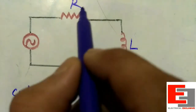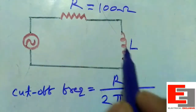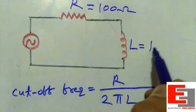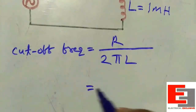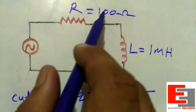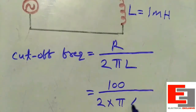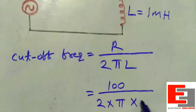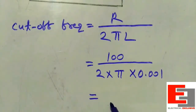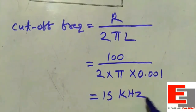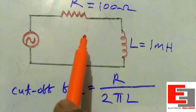Let me take the values of the resistor and inductor connected in the circuit. The resistance is 100 ohm and the inductor is 1 milli henry. Putting in the values: R = 100 ohm, which gives 0.001, equal to 15 kilohertz. This is the cutoff frequency, so this filter circuit will allow all signals above 15 kilohertz.